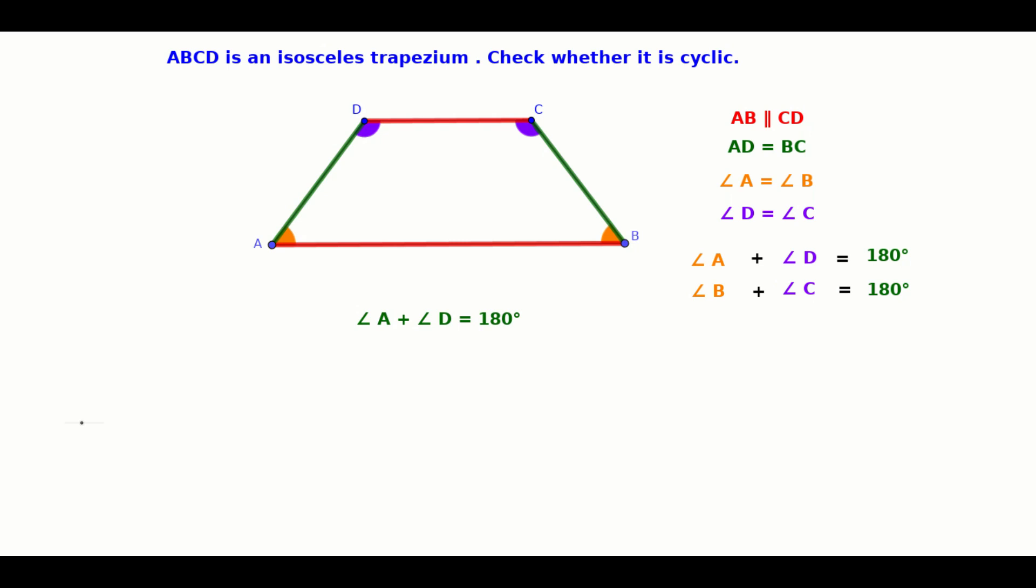That means we can replace angle D with angle C in this equation. Then we get angle A plus angle C equal to 180 degrees.